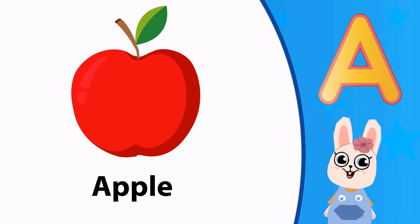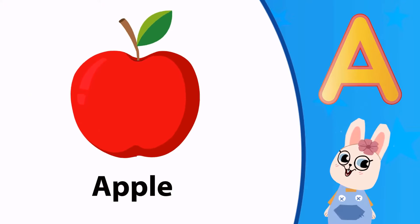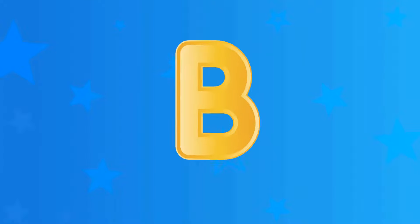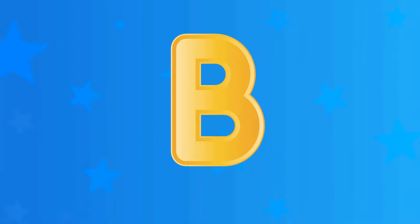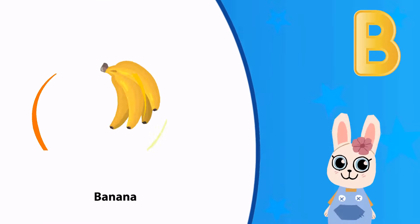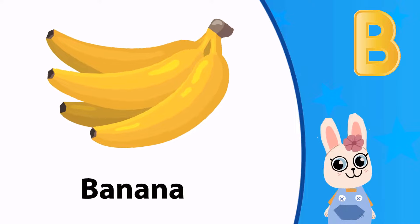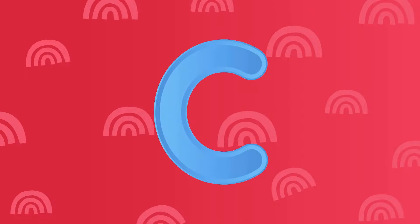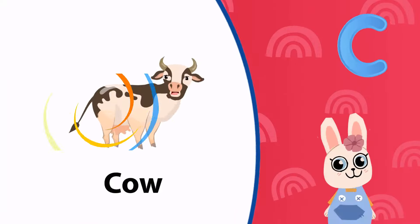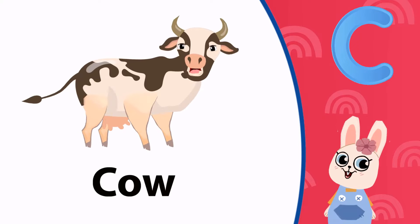A. A is for apple. B. B is for banana. And C. C is for cow.